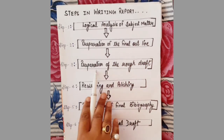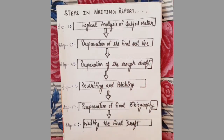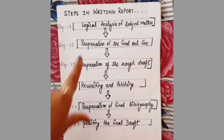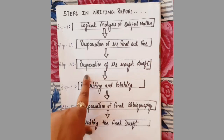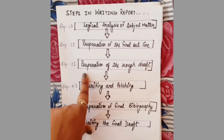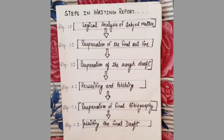Step three is the preparation of the rough draft. This follows the logical analysis of the subject and preparation of the final outline. After performing the logical analysis and preparing the framework, a rough sketch is drawn based on that framework. The benefit of the rough sketch is that before making the final outline, you can find out any shortcomings or drawbacks. The rough draft is essentially a combination of the logical analysis of the subject and the preparation of the final outline.